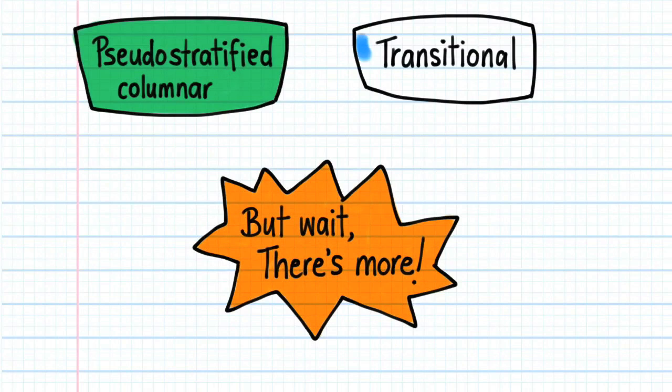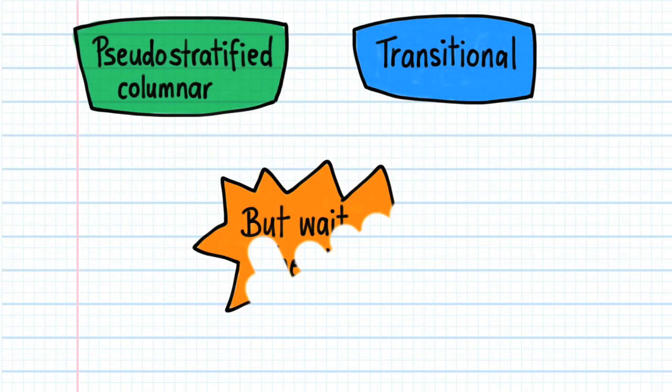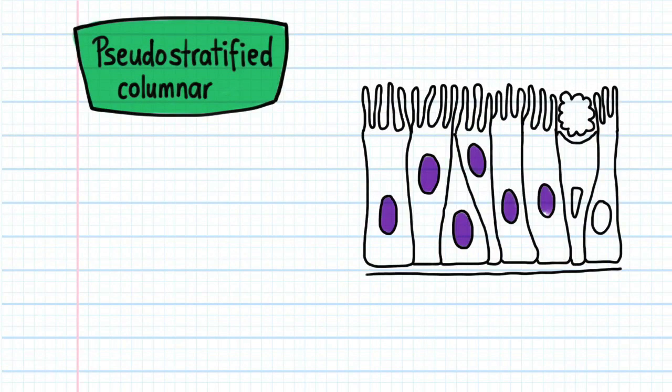These are pseudostratified columnar epithelium and transitional epithelium. This is what pseudostratified columnar epithelium looks like.